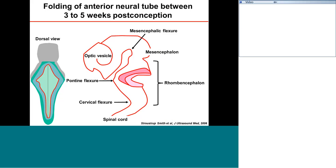Between the third and fifth weeks post-conception, a number of flexures develop at the rostral end of the neural tube. The one that most concerns us today is the pontine flexure, which develops around about the future pons. In doing so — in flexing here — there is a bulging out of the dorsal neural tube. Together with mesenchymal influences, there is a thinning of this roof of the future fourth ventricle.